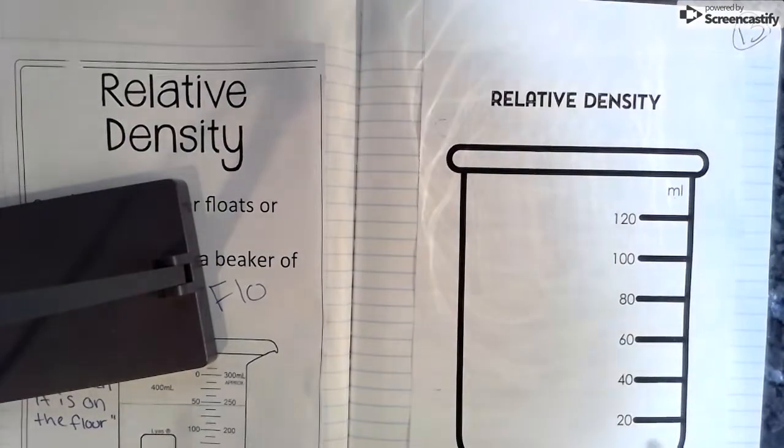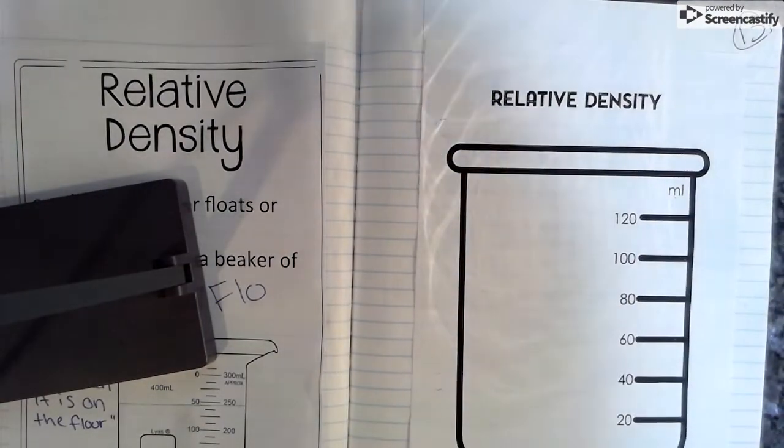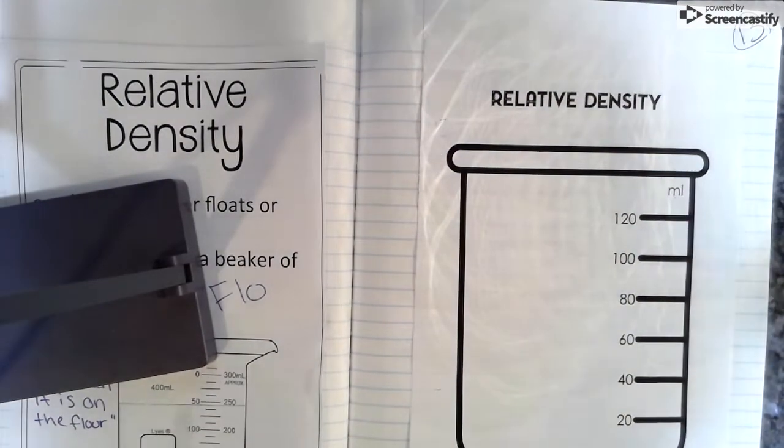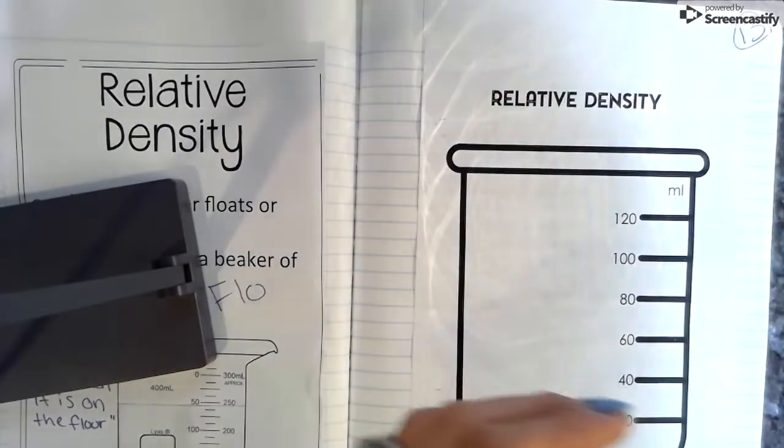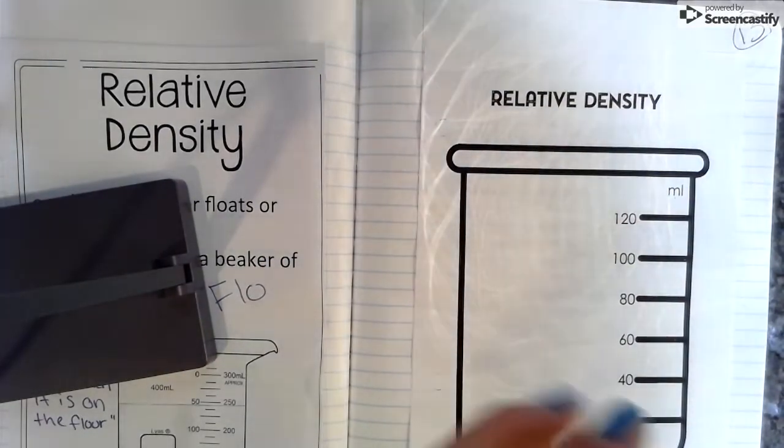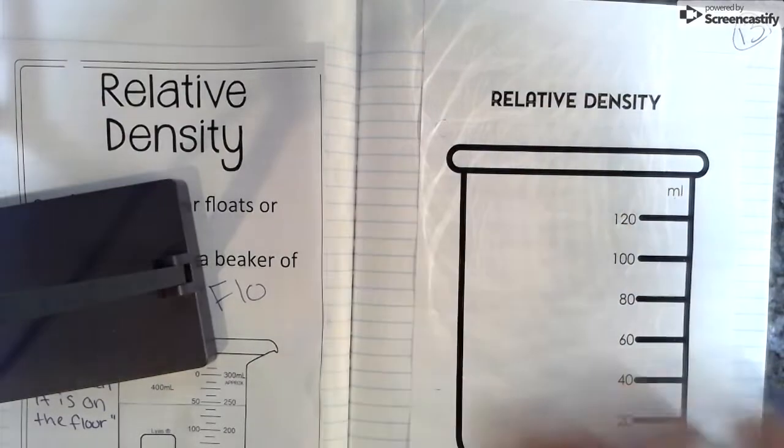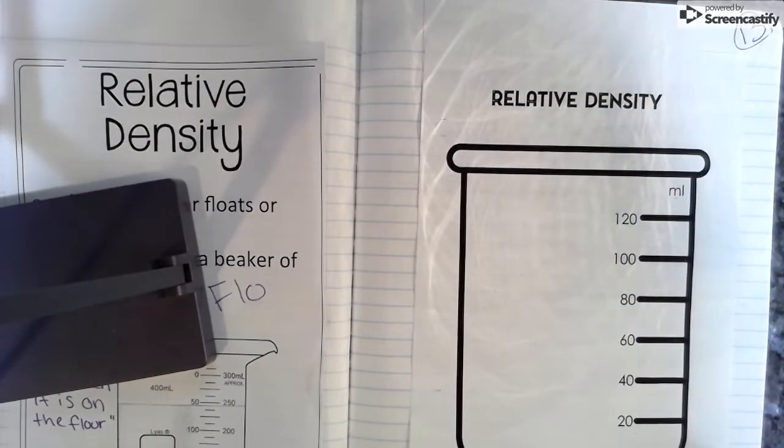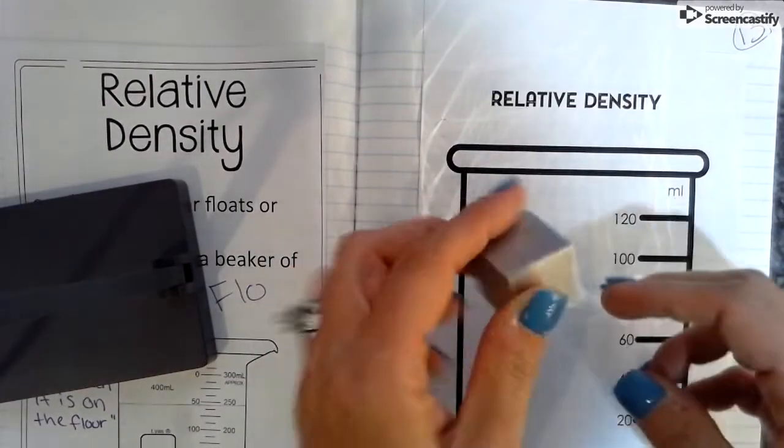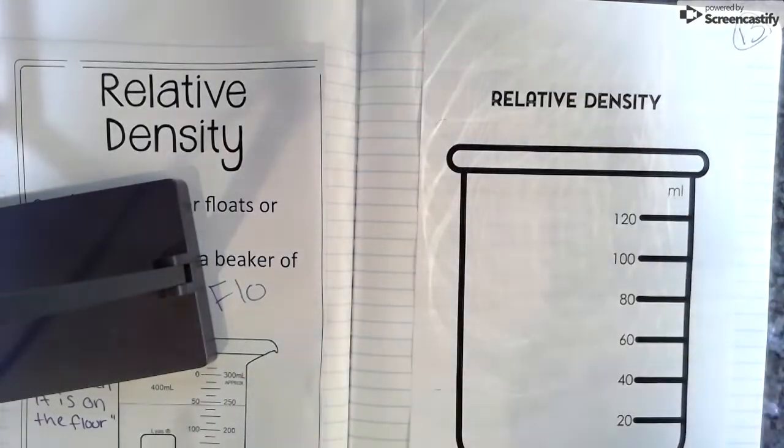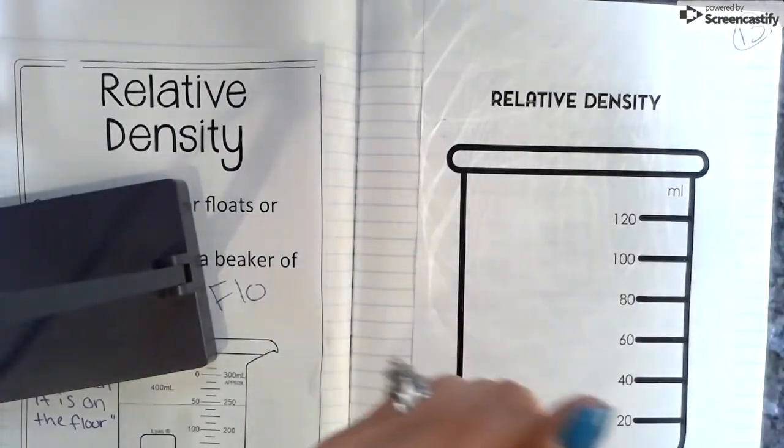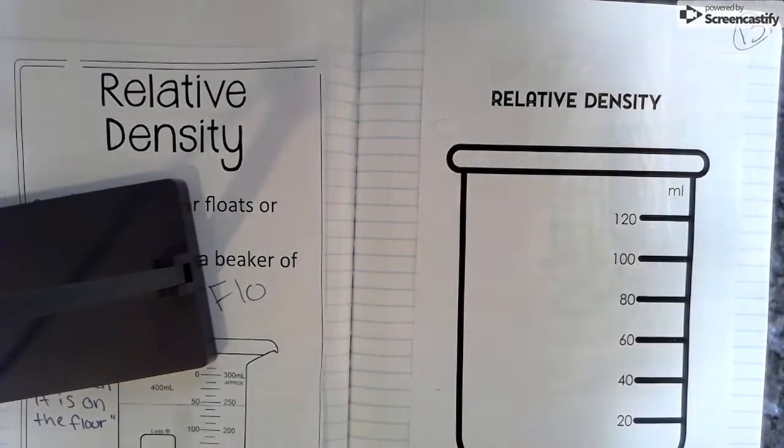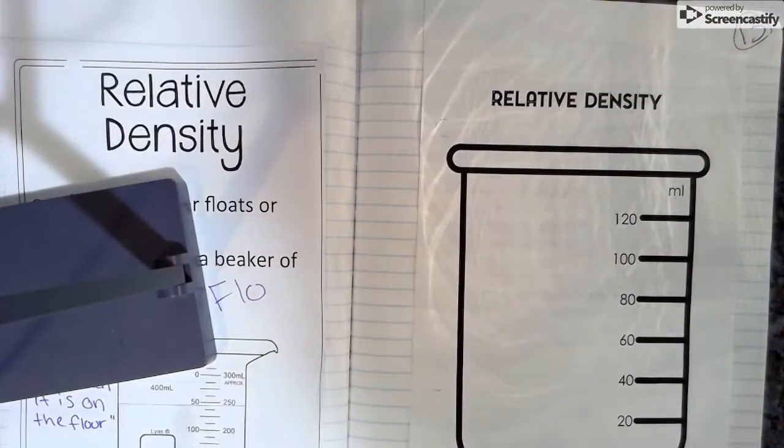And we're going to test the relative density of certain objects. We're going to test the relative density of a paperclip, a ping pong ball, a wooden block, a metal cube, and a domino.